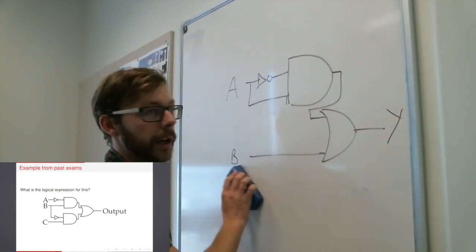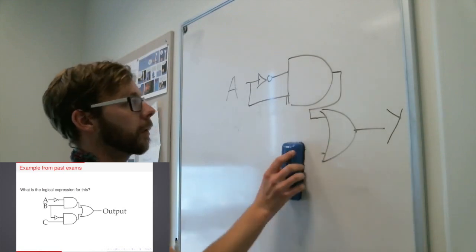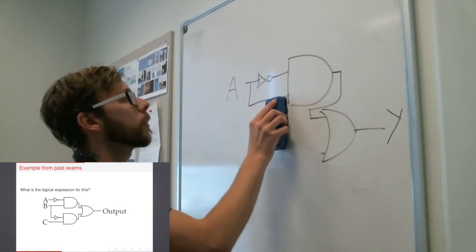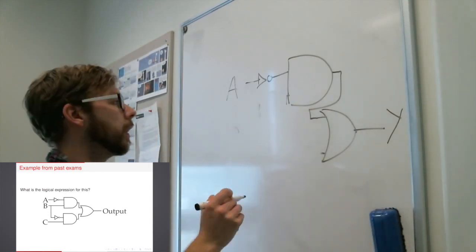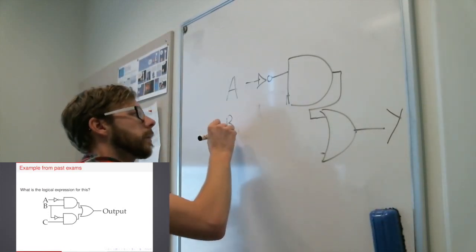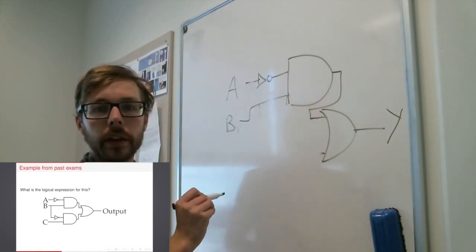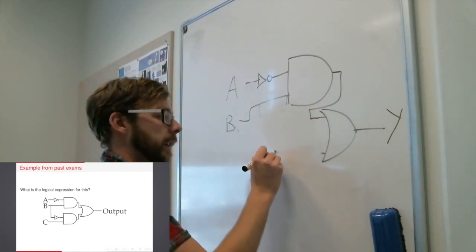So let's try one more. Here's a bigger example that I'll draw out. And now we've got multiple different inputs. Just clear that off. There we go. Okay. So I've got a B.